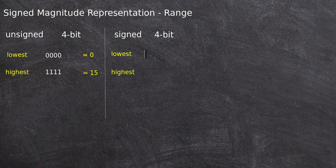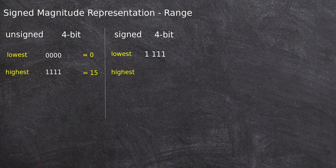One thing we need to remember: the first bit, that is the most significant bit, is the sign bit. The lowest number is possible when the sign bit is negative, so we place 1 there. As it is a 4-bit representation, 3 more bits are available. A number becomes lowest with a negative sign when the magnitude is highest, and the highest magnitude is possible when all the remaining bits are 1. So with three 1s, the lowest number is negative 7 in decimal.